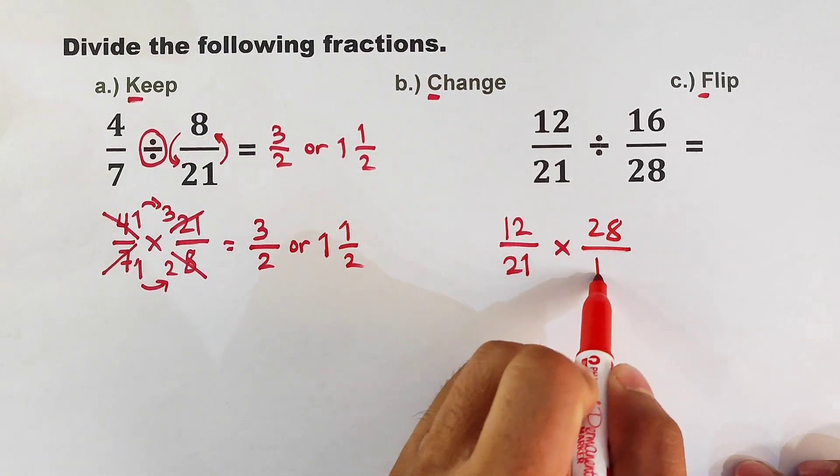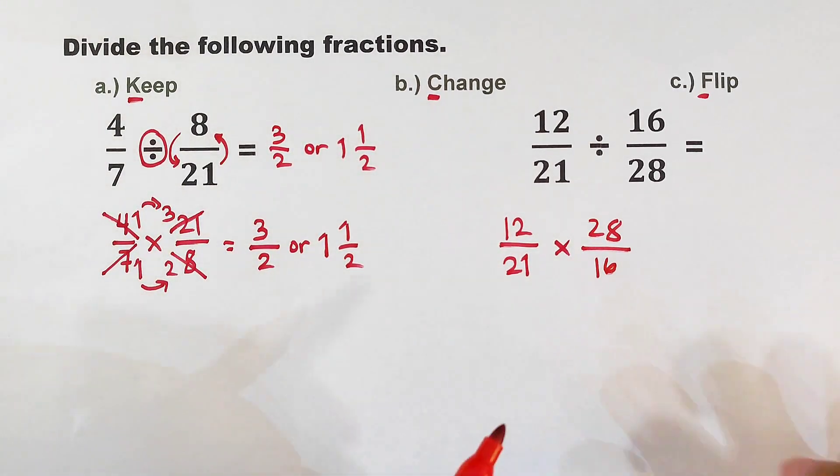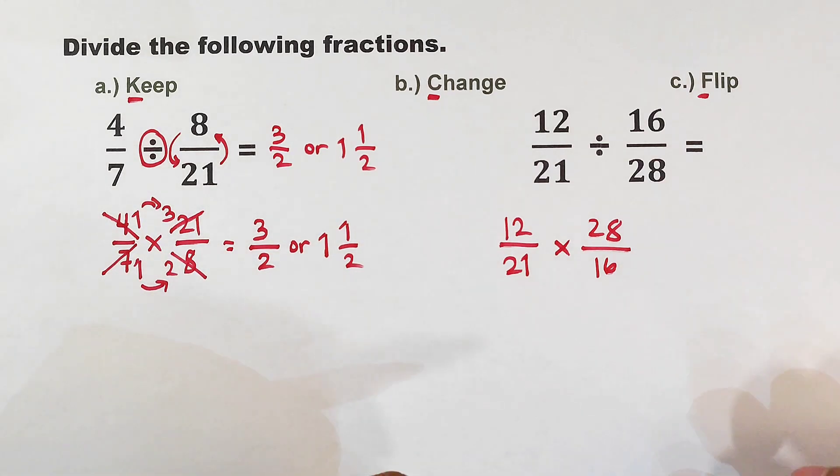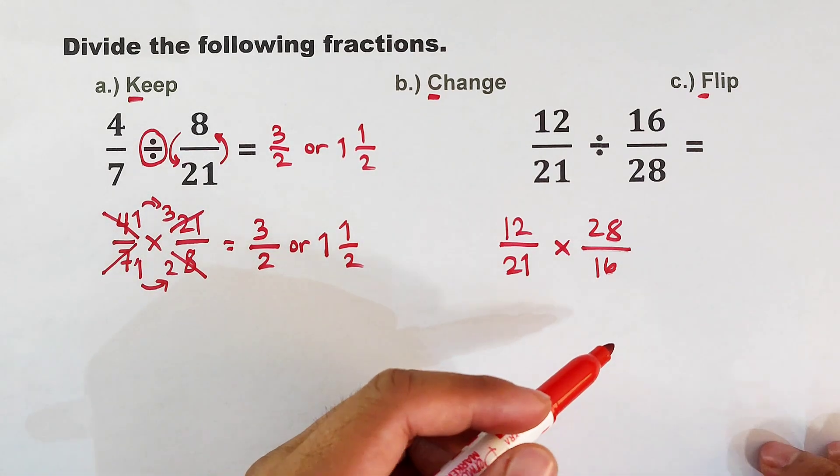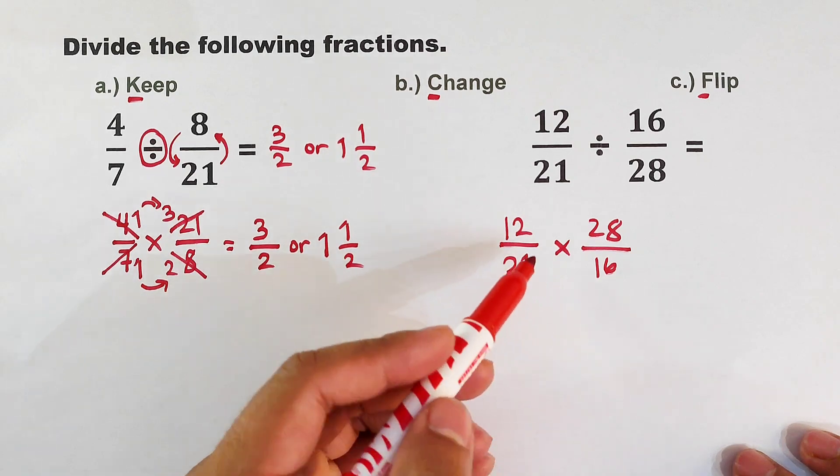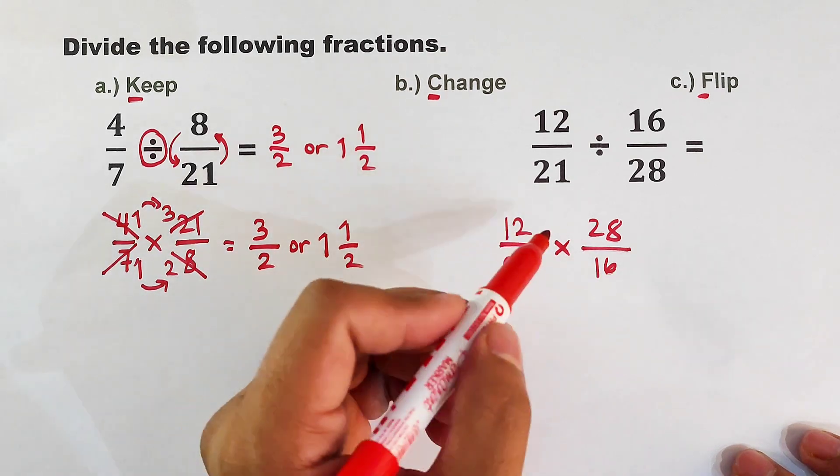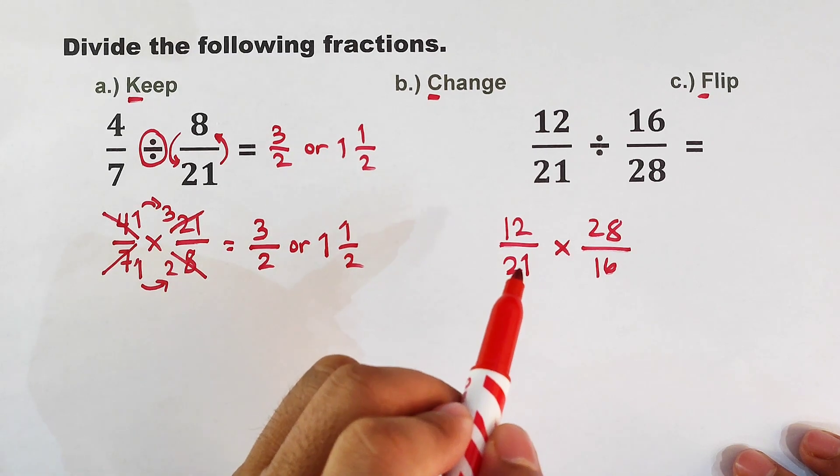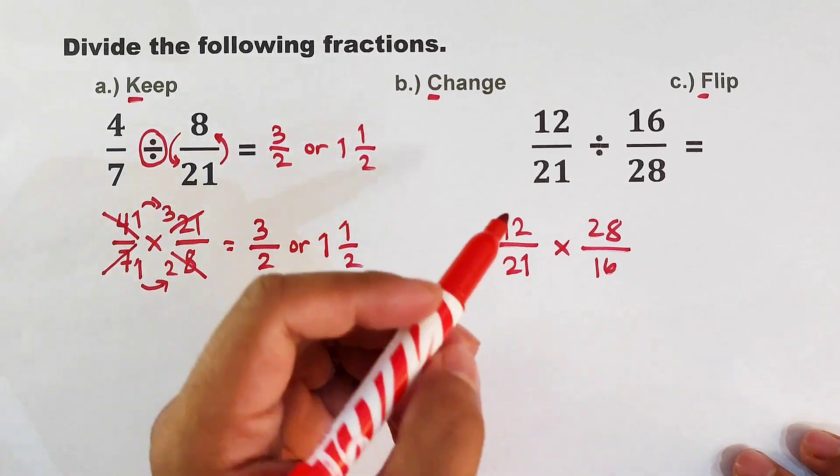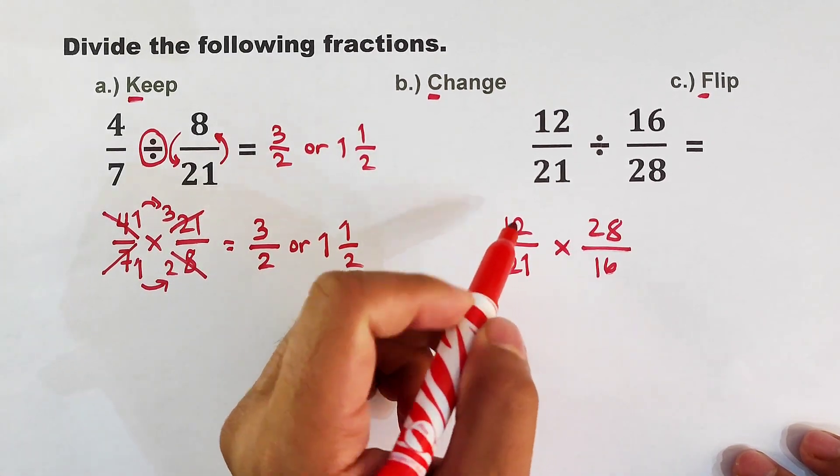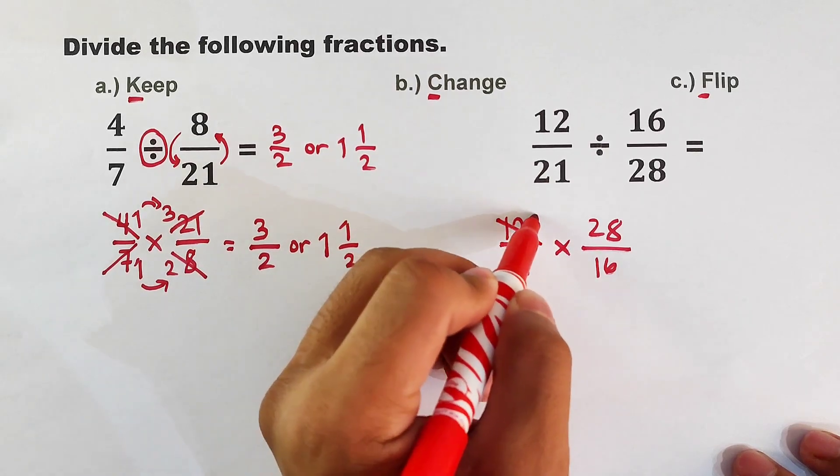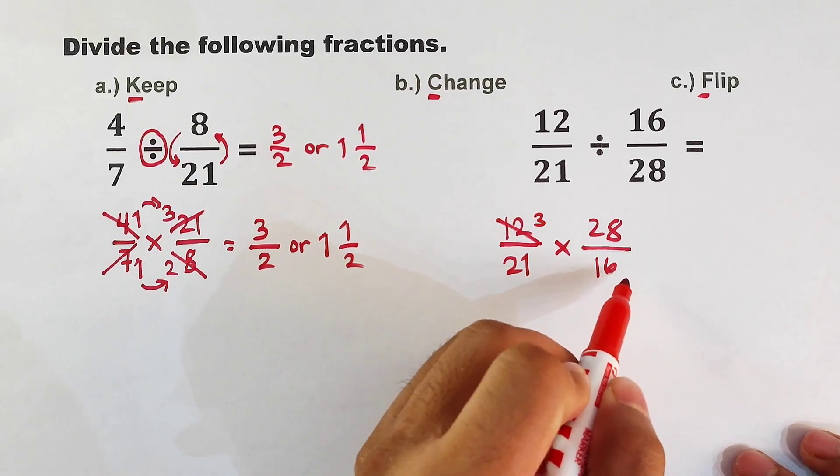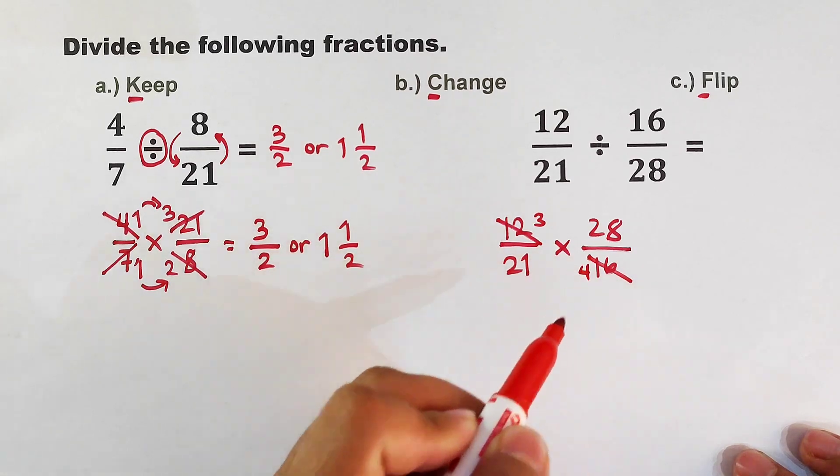As you can see, the numbers are big, so we might use the cancellation method if we can cancel out some numbers. We have here 12 and 16. Now for 12 and 16, their common factor is definitely 4. So how many 4s do we have in 12? We have 3 fours. How many 4s do we have in 16? We have 4 fours.